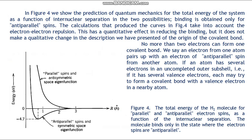No more than two electrons can form one covalent bond. We say an electron from one atom pairs up with an electron of anti-parallel spin from another atom. If an atom has several electrons in the uncompleted outer shells — that is, if it has several valence electrons — each may try to form a covalent bond with a valence electron of a nearby atom. Figure 4 shows the total energy of the hydrogen molecule for parallel and anti-parallel electron spins as a function of internuclear separation.